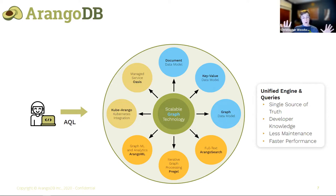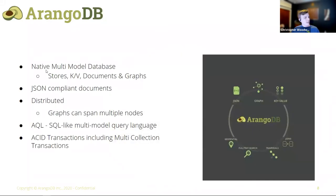All of this comes together with our unified query language, AQL. The huge benefit is that you get a single data source — a single source of truth. It requires less developer knowledge to use multiple different data models and comes with less maintenance and faster performance. ArangoDB supports JSON documents, is distributed, AQL is very SQL-like, and of course we support full ACID transactions, including multi-collection transactions.